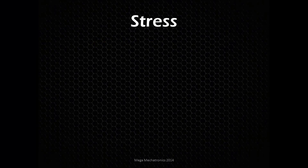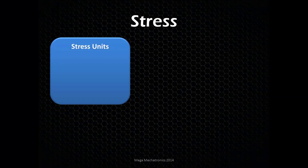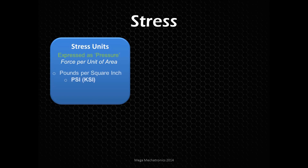So let's talk about what stress is. The units of stress are expressed as a pressure, like the pressure in your tire or atmospheric pressure — that's a force per unit of area. The units are, here in the states, pounds per square inch, or KSI, which is PSI divided by 1000. In the metric system we have Newtons per square meter, known as pascals, megapascals and gigapascals.